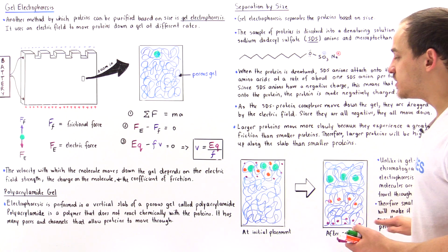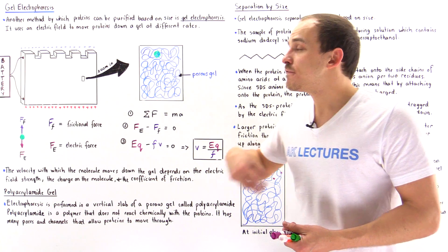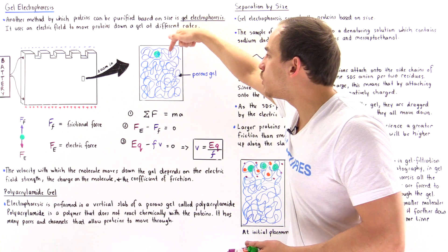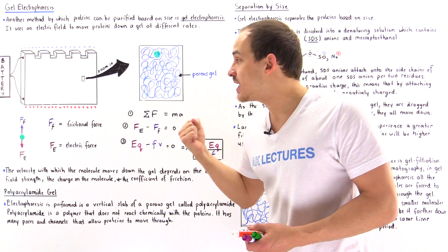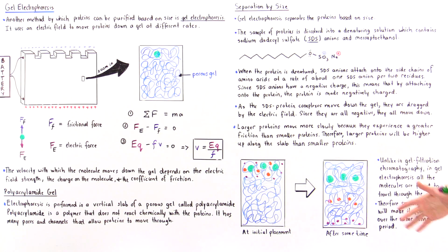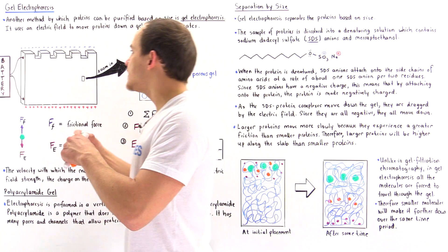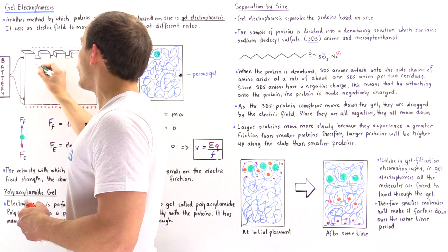And those very tiny proteins, the purple ones, will find it easier to move along these channels and pores because of its physical size, because of that smaller drag force. And so over time, we basically see three different bands form.